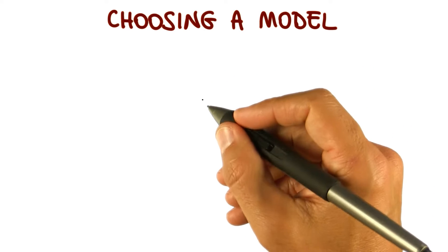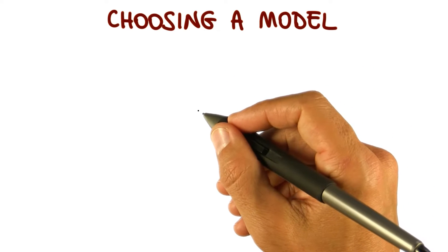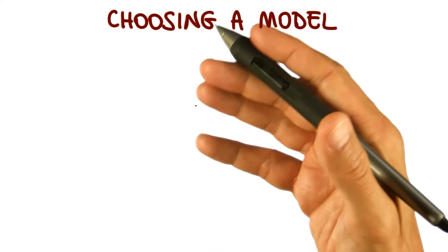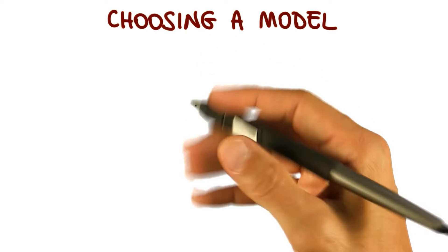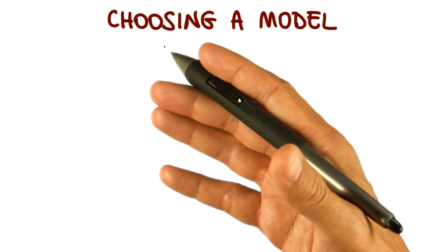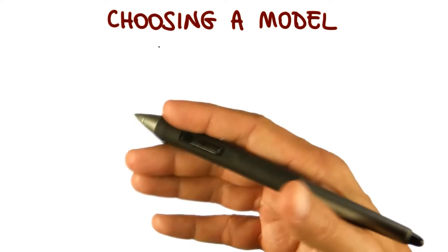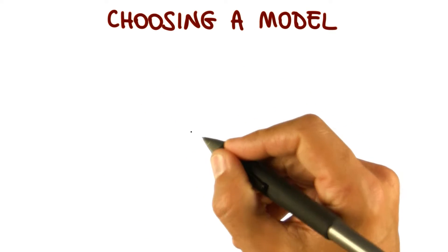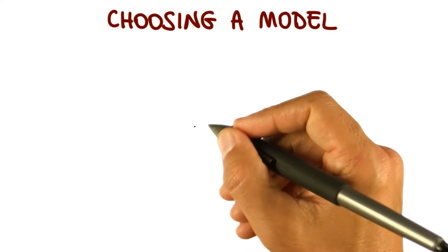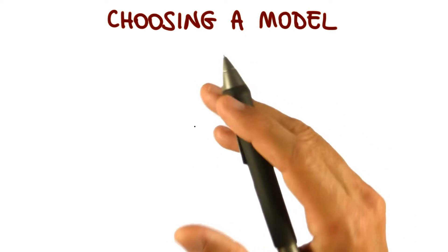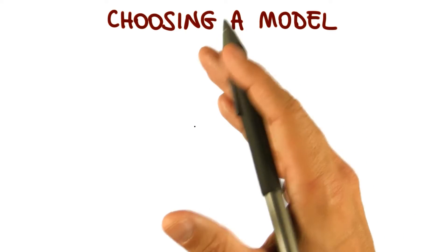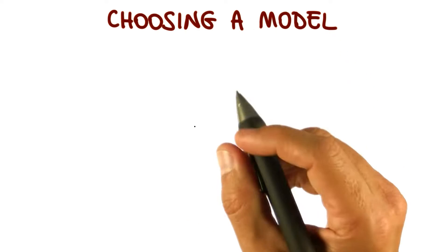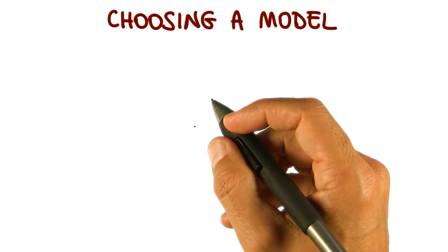We just saw several software process models, and there are many, many more. Because these process models define the master plan for our project, the specific process model that we choose has as much influence over a project's success as any other major planning decision that we make.